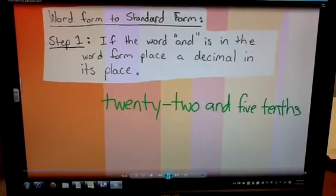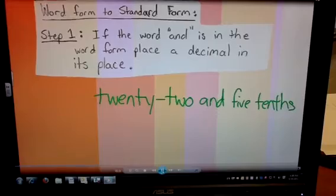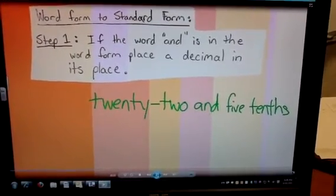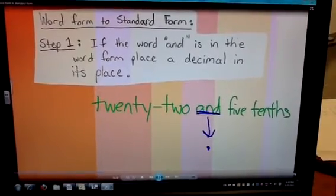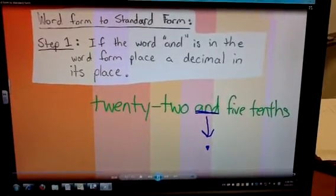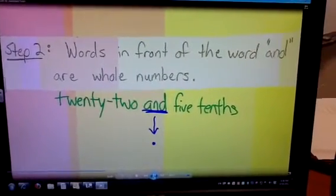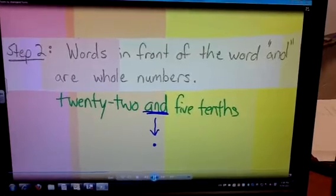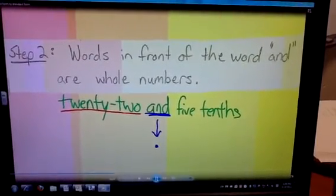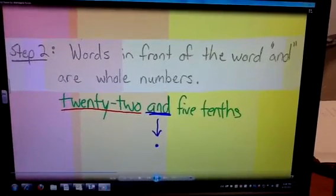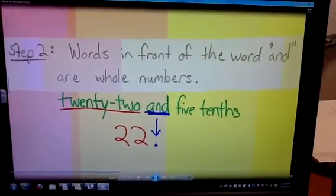Working through step one, you can see again we're converting from word form to standard form. We look at our sample and we can see that the word AND appears. We're simply going to replace this with a decimal and move on to step number two. The words in front of the word AND are whole numbers, so if I look at these words in front of the word AND, they should be my whole numbers. Twenty-two. That means two tens and two ones.